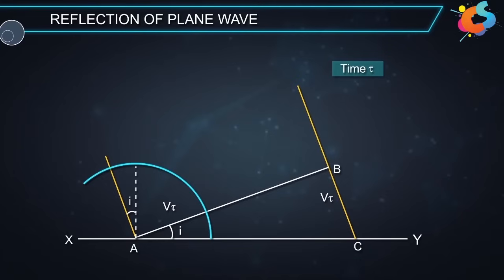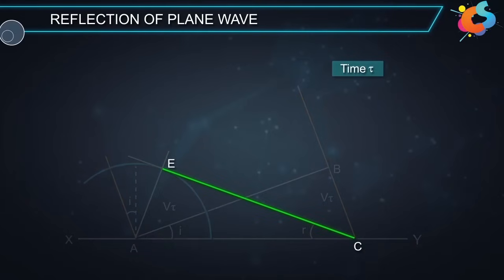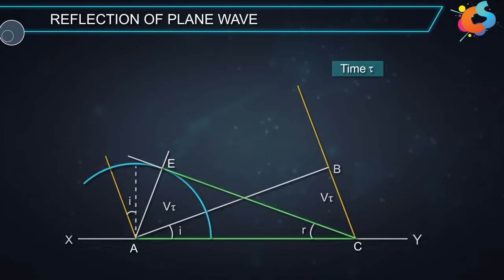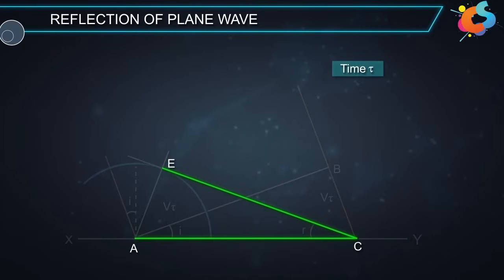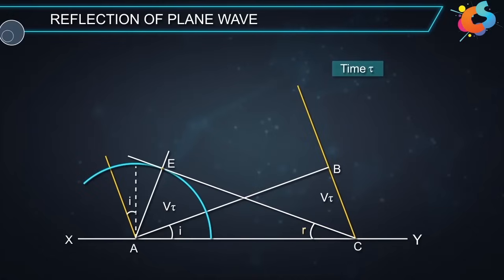Now draw a tangent plane from point C to the sphere. Let's call this point E. The plane CE represents the reflected wave front and the angle ECA is the angle of reflection.